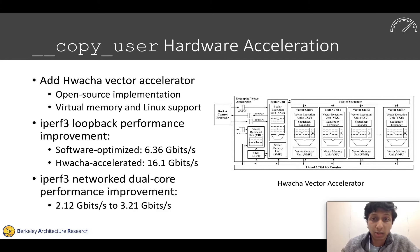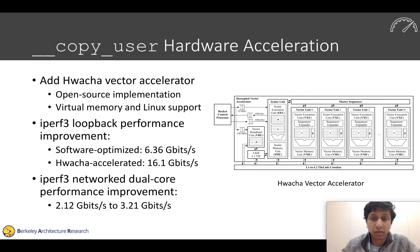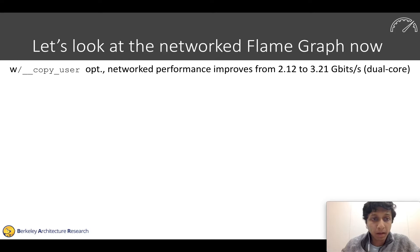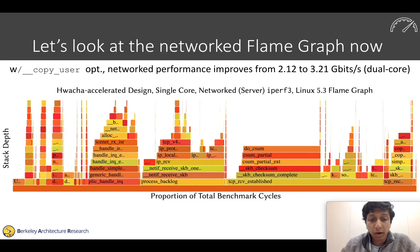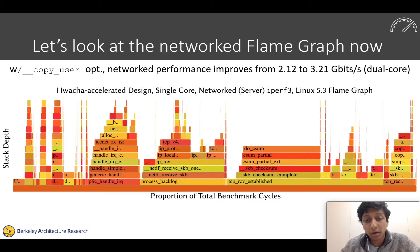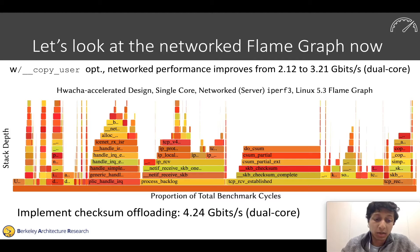In the networked case with two simulated nodes, we also see a performance improvement, going from a baseline of 2 gigabits per second to 3.2 gigabits per second with Hwacha acceleration. Looking at the networked flame graph, copy_user has disappeared, but we see another function called do_checksum — doing checksumming in software. So we'll implement a well-known optimization: checksum offloading in our NIC. Once we do this, our networked performance improves to 4.24 gigabits per second.